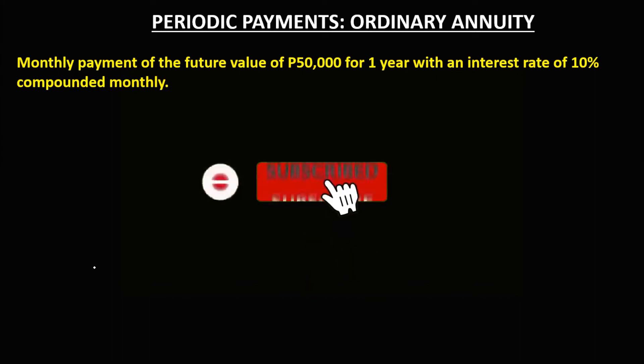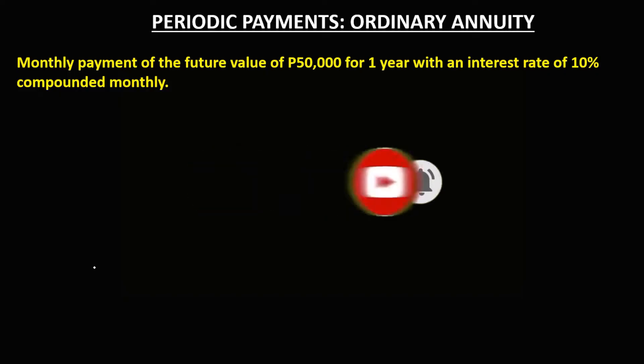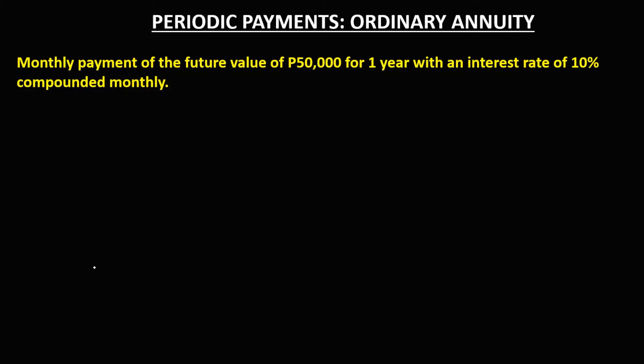Let's have this problem. To find the periodic payments of an ordinary annuity, we have this problem: monthly payment of the future value of P50,000 for one year with an interest rate of 10% compounded monthly.